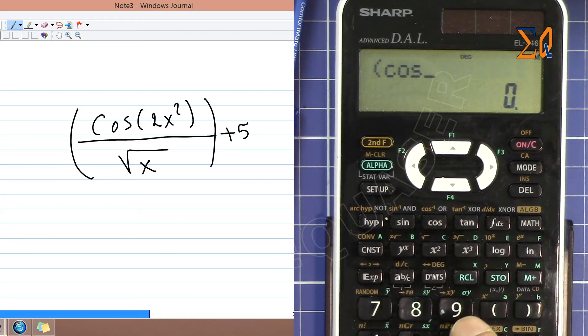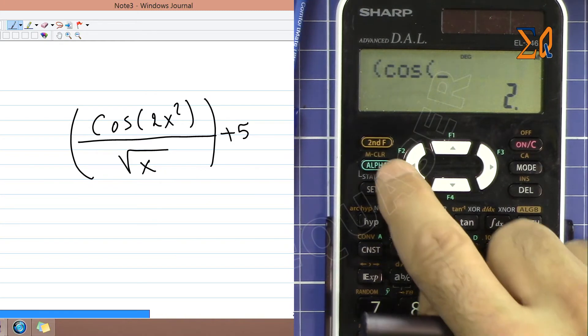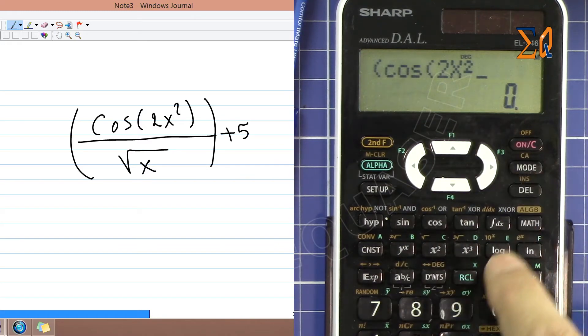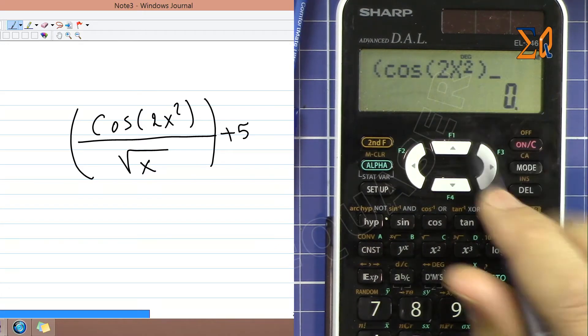So cosine of, open another parenthesis here, 2, and then I'm pressing alpha X and then squared, close the parenthesis.